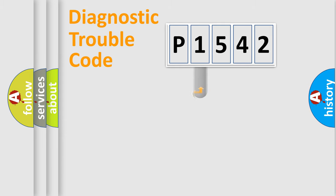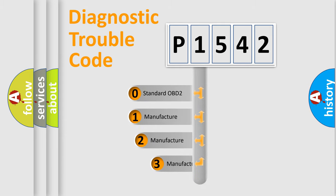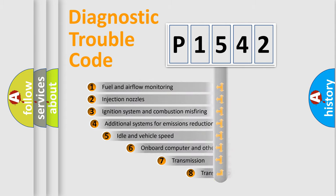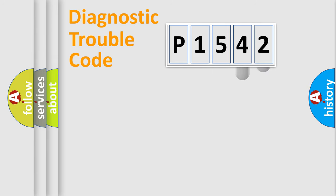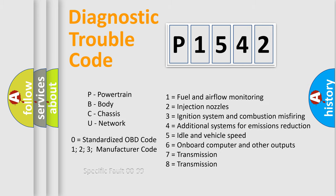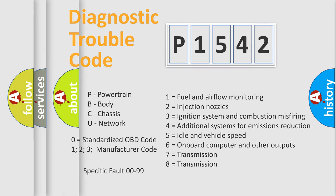This distribution is defined in the first character of the code. If the second character is expressed as zero, it is a standardized error. In the case of numbers 1, 2, or 3, it is a more specific expression of a car-specific error. The third character specifies a subset of errors. The distribution shown is valid only for the standardized DTC code. Only the last two characters define the specific fault of the group. This division is valid only if the second character code is expressed by the number zero.